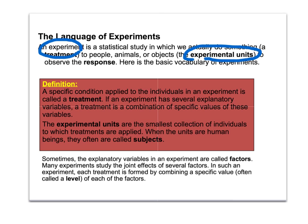We're going to observe their response. So if I ask them to run up the stairs and then I measure their heart rate, their response would be the heart rate. A treatment is a specific condition that we're going to apply to individuals in our experiment. You can have more than one treatment or more than one variable, but a treatment will try to show the effect on one of those variables. Experimental units are the smallest units of individuals to which the treatments are applied. Usually when they're humans, we call them subjects.